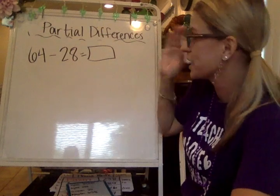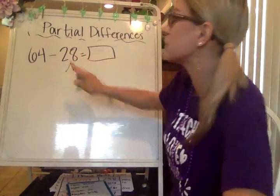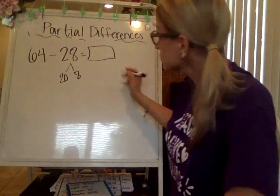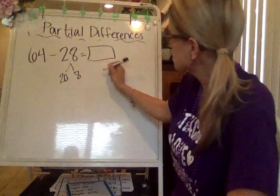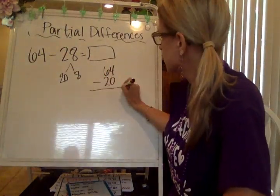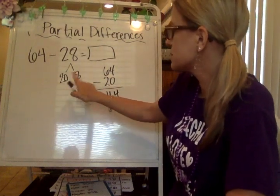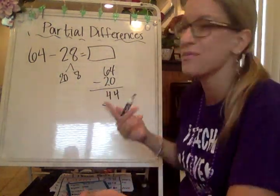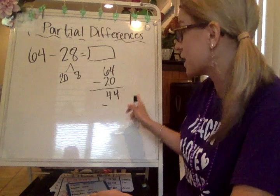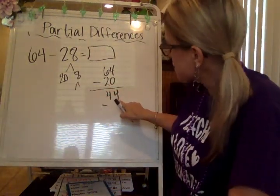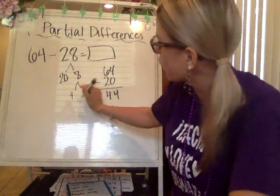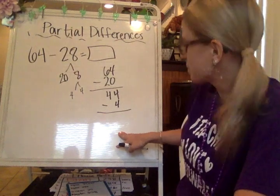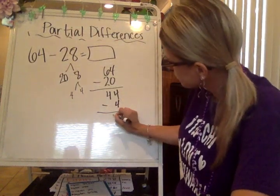64 minus 28 — we're using partial differences. I'm going to be breaking apart this number. 28 is the same as 20 plus 8. So first I'm going to subtract the 20: 64 minus 20. Then I'm going to subtract 8. I'm going to break this apart — I'm going to get rid of the 4 in the ones place. So I'm going to break 8 into 4 plus 4. First we subtract the 4, and then we subtract the other 4 in a minute. So 44 minus 4 is 40.